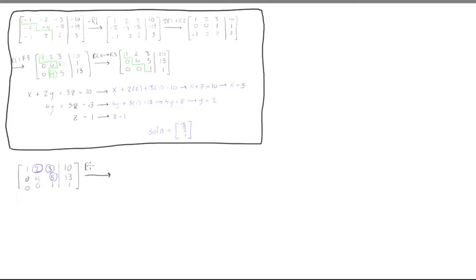Row 2 minus 5 times row 3. Okay, so what do we get now? We'll have the row 3 doesn't change: 0, 0, 1, and a 1. Now row 2 we're subtracting 5 times row 3 there to get make this a 0, so we have 0, 4, 5 times 5 minus 5 times 1 is 0, and 13 minus 5 times 1 is 8. And then the top row is the same: it was 1, 2, 3, and 10.